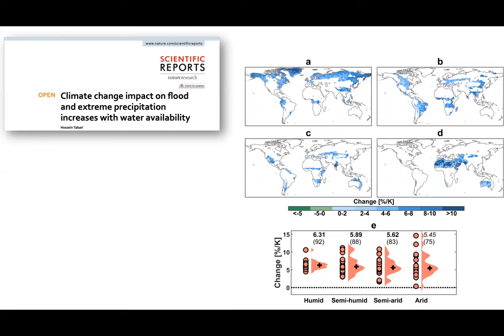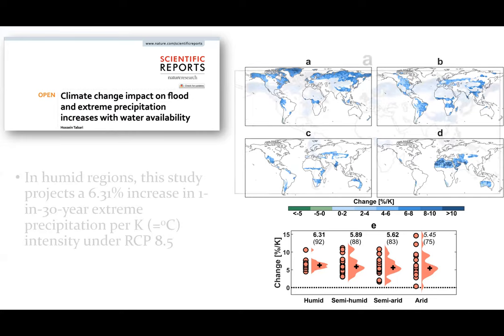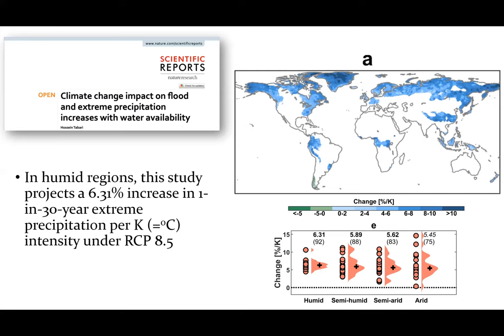One thing we don't often talk about is the change in precipitation and extreme precipitation events with climate change. A recent Nature paper projects that in humid regions, one-in-30-year extreme precipitation events will increase by 6.31% per degree Celsius of warming. In other words, the one-in-30-year event becomes roughly a one-in-28-year event. I hope today's research will help us understand how tree species will respond to waterlogging, which may become much more frequent in humid regions.